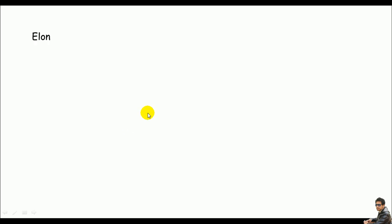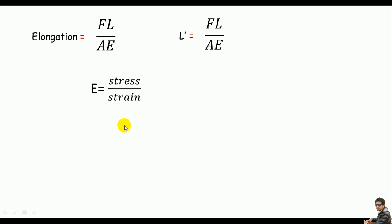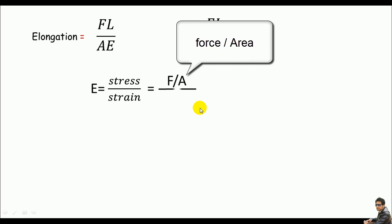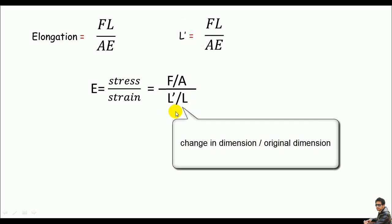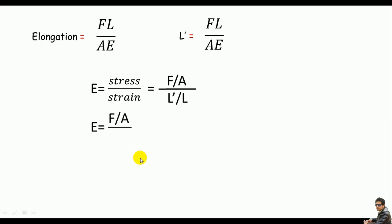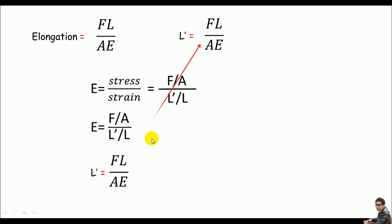Many of you may wonder where the formula comes from, so let's prove it. The modulus of elasticity E is the ratio of stress to strain. Stress equals F divided by A, and strain equals the change in dimension δ divided by the original length L. So E = (F/A) / (δ/L). Rearranging for δ gives δ = FL / AE — and that's the formula proved.